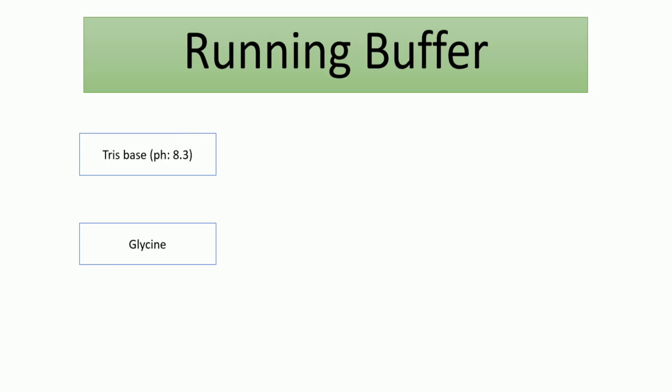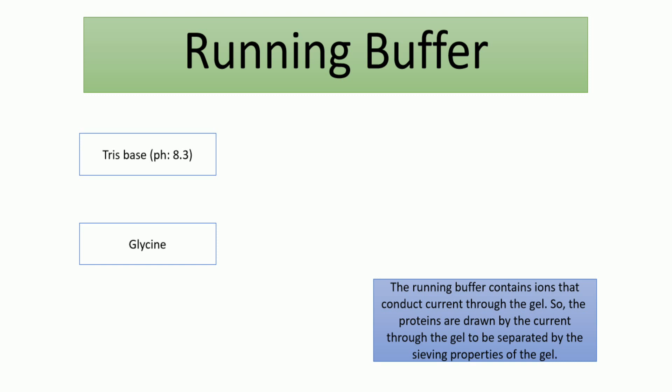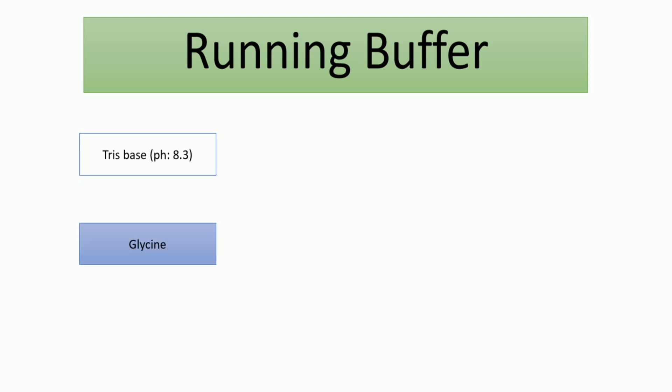We also have the running buffer. The running buffer is important because it provides the ions to conduct electrophoresis through the gel. It mainly has two components: Tris, which is alkaline at pH 8.3—more alkaline than the stacking gel but still basic—and the most important is glycine. Glycine is the simplest amino acid.